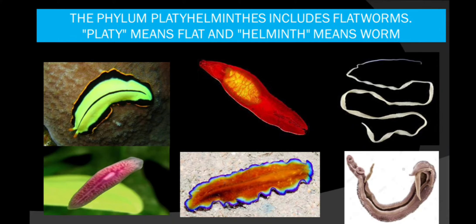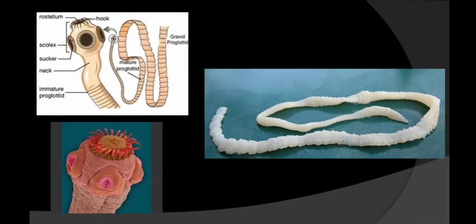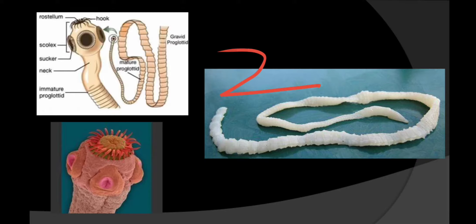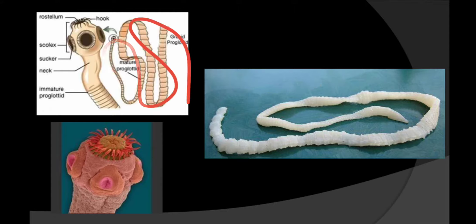This is Schistosoma, this is fluke, and this is Taenia solium, this is Planaria. These are also members of the Turbellaria class. This deep form causes a disease teniasis and it is having two hosts: human and the pig. The body is divided into three parts — the upper part is known as scolex, then neck, and the next part is the strobili.